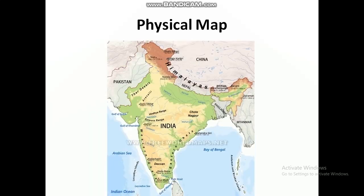Next is physical map. Physical maps show physical features of the earth like mountains, plateaus, rivers, plains, and oceans. These are called physical maps.